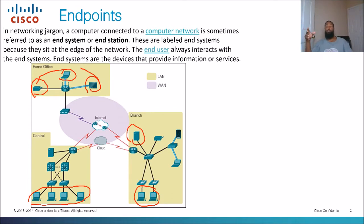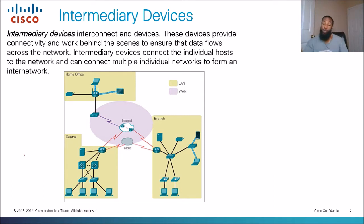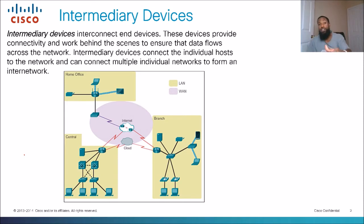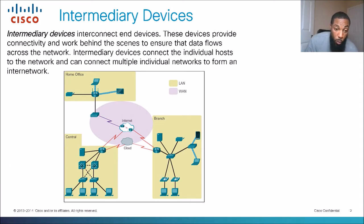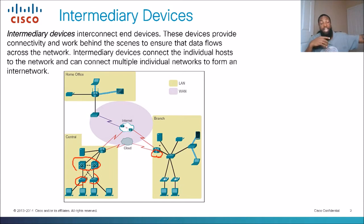End systems are the devices that provide information or services. This is as opposed to intermediary devices. Intermediary devices interconnect end devices, endpoints, end systems, end stations, hosts, or nodes — whatever you want to call them. Those sit at the end of the network as opposed to intermediary devices. Intermediary devices provide connectivity and work behind the scenes to ensure the data flows across the network. Looking at this topology, we've got these two switches, a layer two switch, layer three switches, and these routers. Notice they sit on the inside of the network and connect the end devices to the network or the internet.